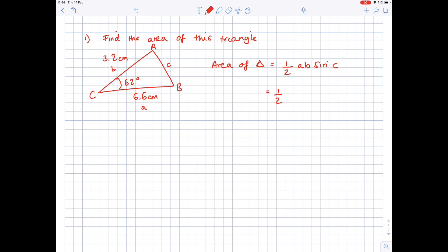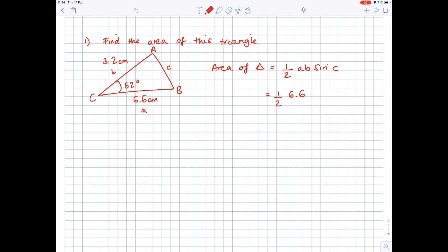So let's just substitute in our values. So what is side A? Well, that's 6.6. We need to multiply that by side B, which is 3.2, and multiply that by the sine of angle C, which is 62 degrees. And really, you can just pop that into your calculator as it is. And you'll get a value which, to three significant figures, is 9.32, and it's centimeters squared because we're finding an area after all.